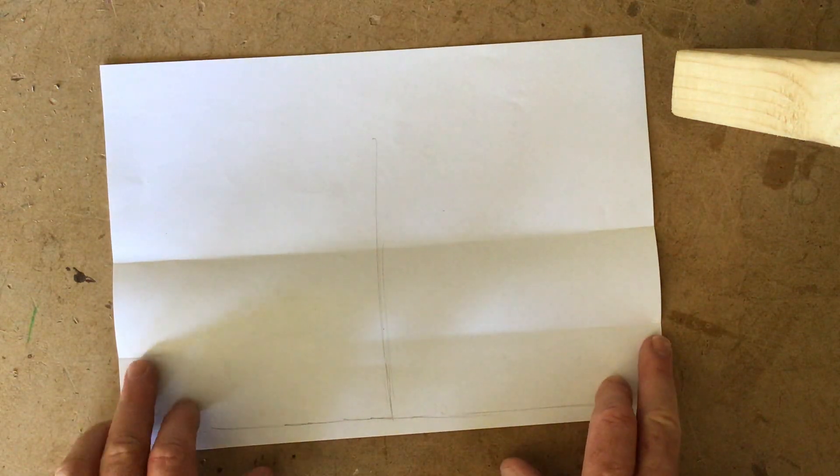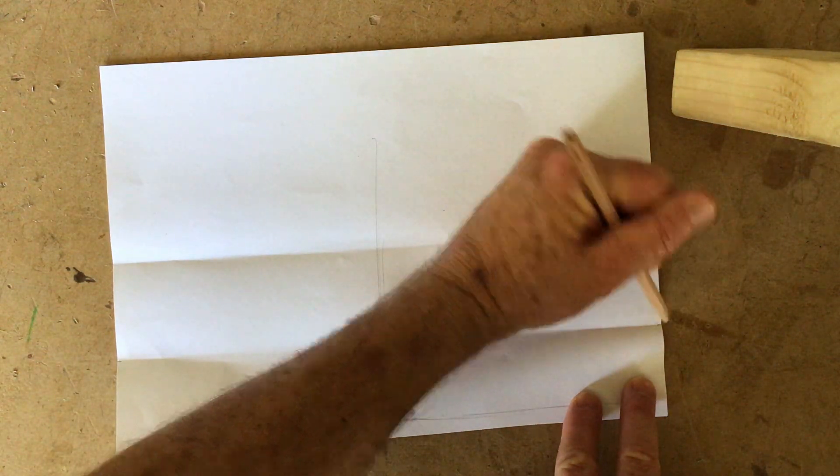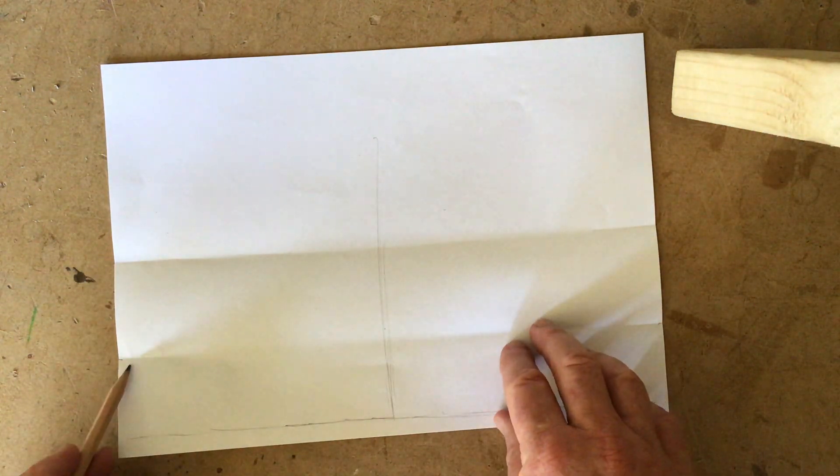You can see marks there and there, creases. So if I click there, or make a mark there, make a mark there, and I join this up.